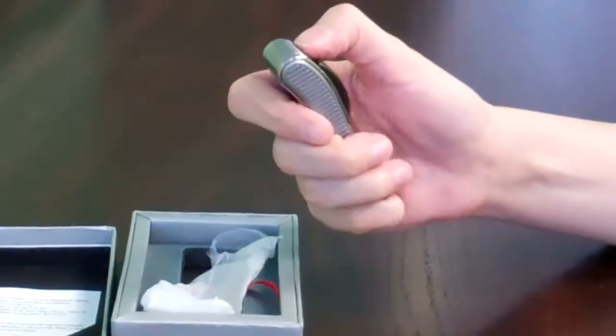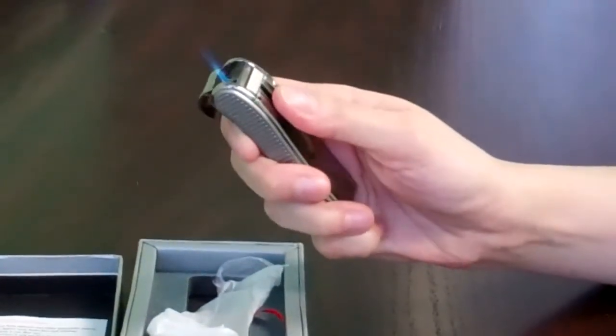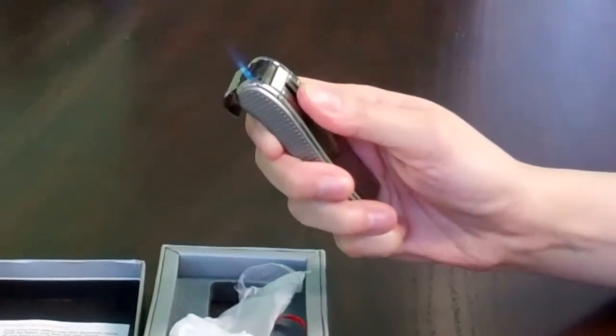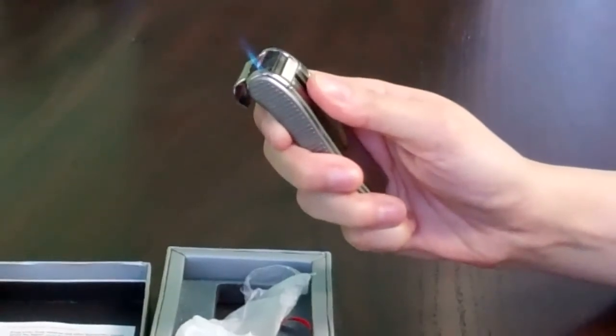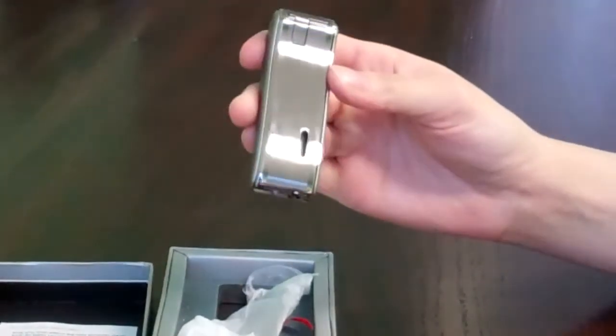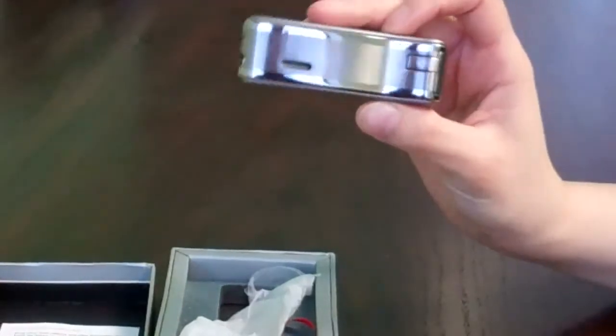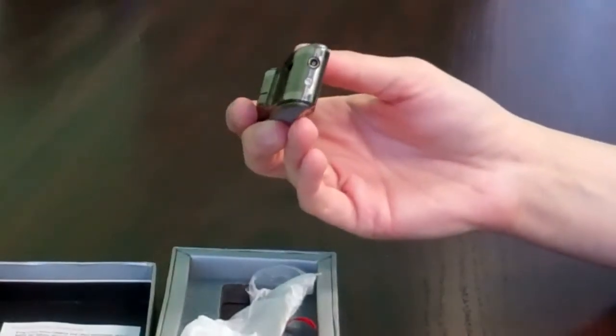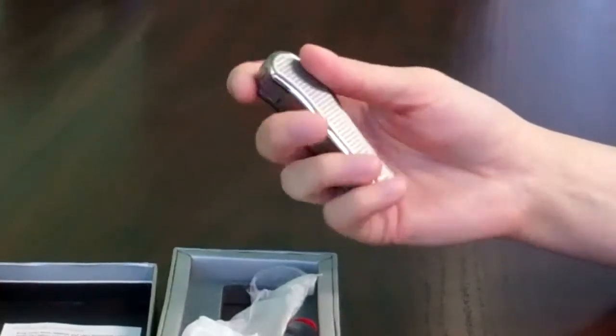This is a single flame blue torch flame lighter. It's also wind resistant and in the back you can see the butane. You can see how much you have left. At the bottom is where you adjust the flame.